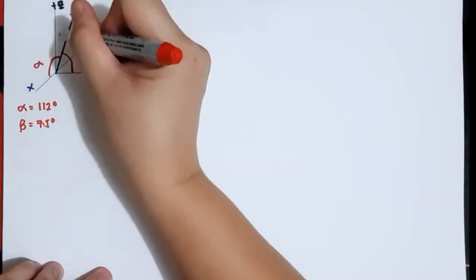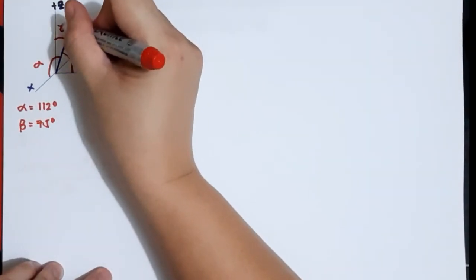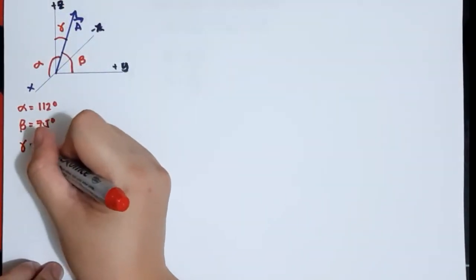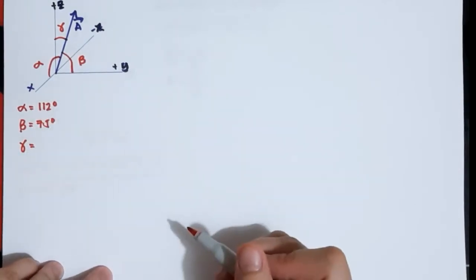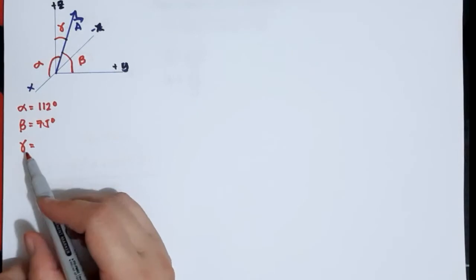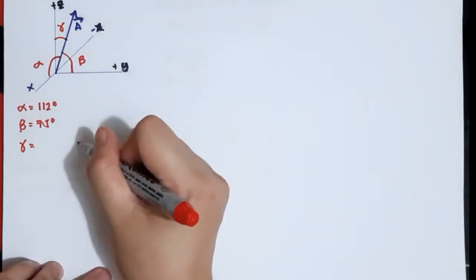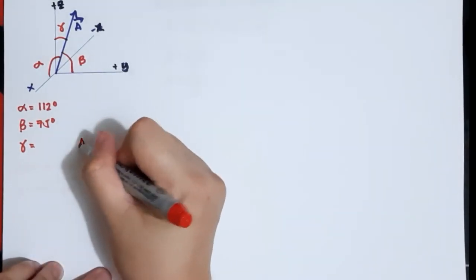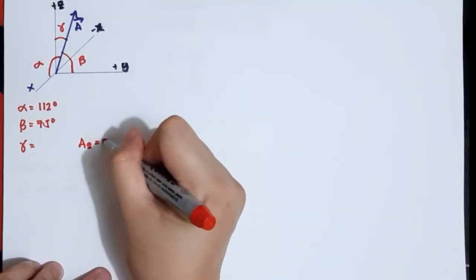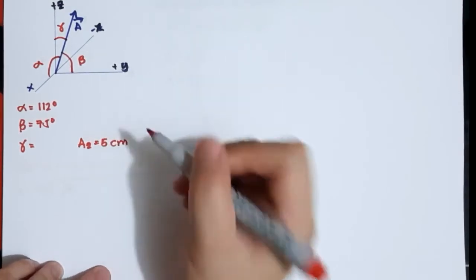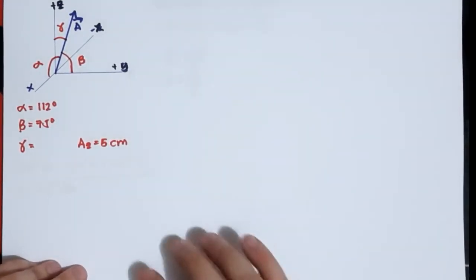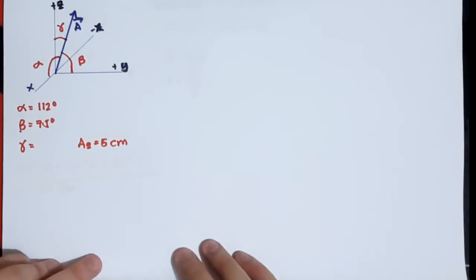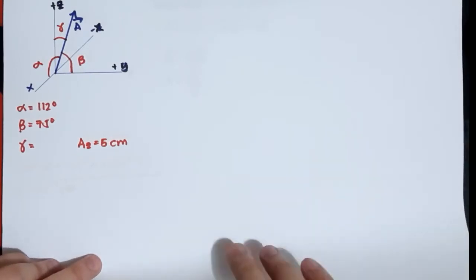We also have gamma. Gamma is not given, but we expect that gamma is less than 90. Since gamma is not given, but its component Az is given, which is 5 cm, we will use this given to find the magnitude and the Cartesian vector A.